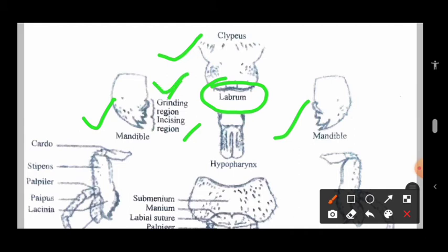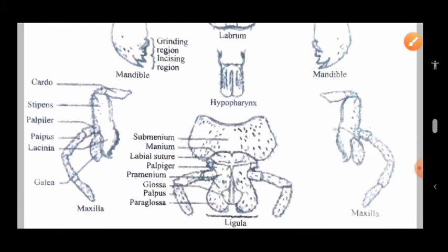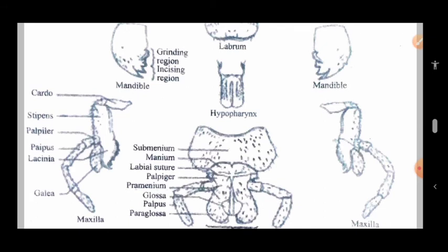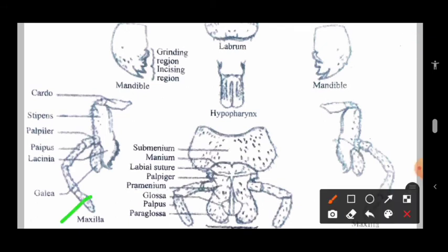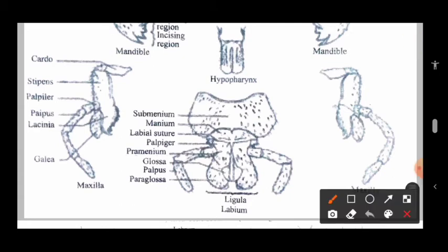The next part is the maxilla. The maxilla is also present as a left maxilla and a right maxilla. In the maxilla there are several parts: cardo, stipes, palpifer, palpus, lacinia, and galea. These are the parts which are present in the maxilla region.